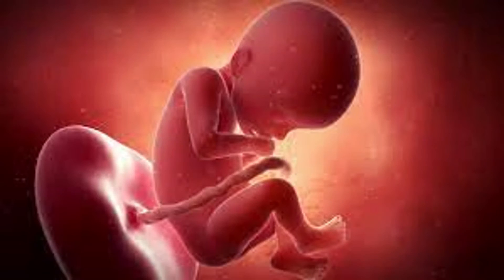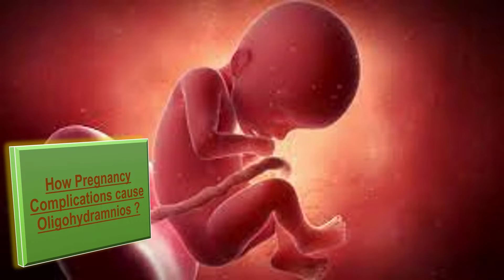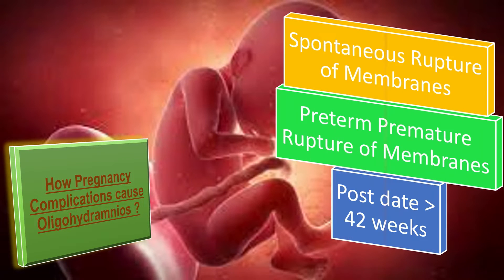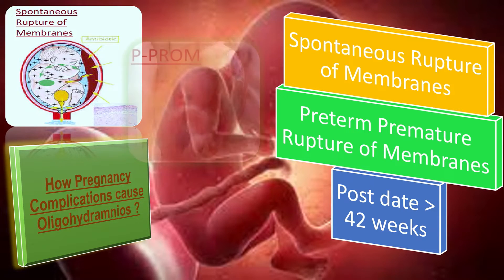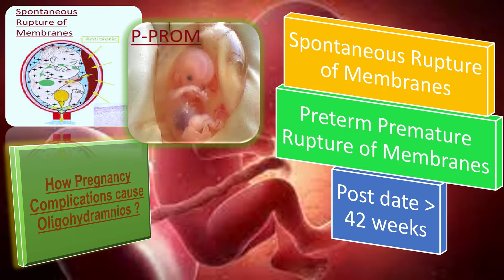Now we will explain how pregnancy complications cause oligohydramnios. First of all, spontaneous rupture of membranes. The ruptured membrane will not allow amniotic fluid volume to stay at an optimum level. In preterm premature rupture of membranes, there is continuous leaking or trickling of amniotic fluid resulting in oligohydramnios.